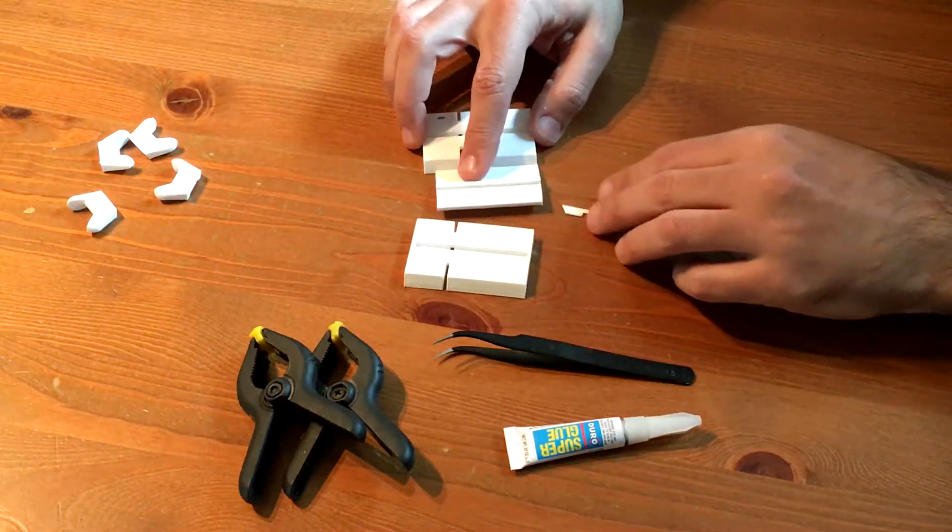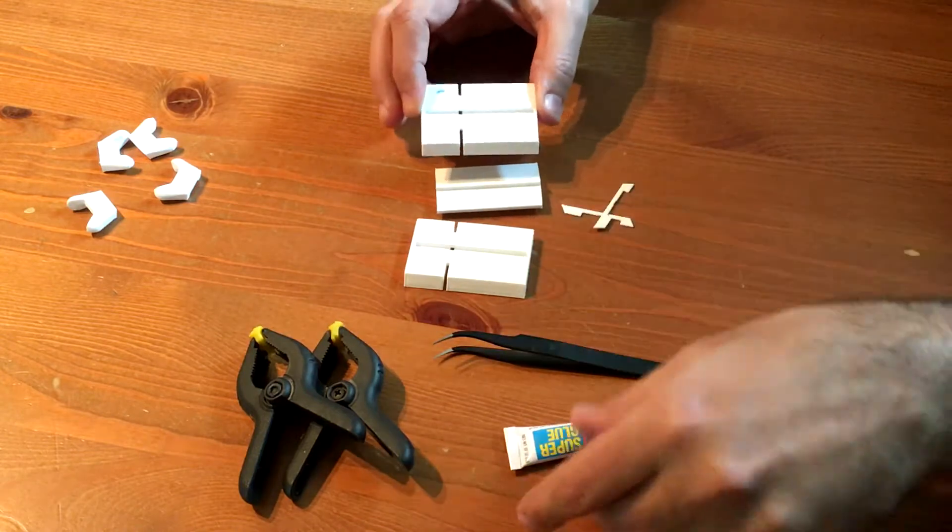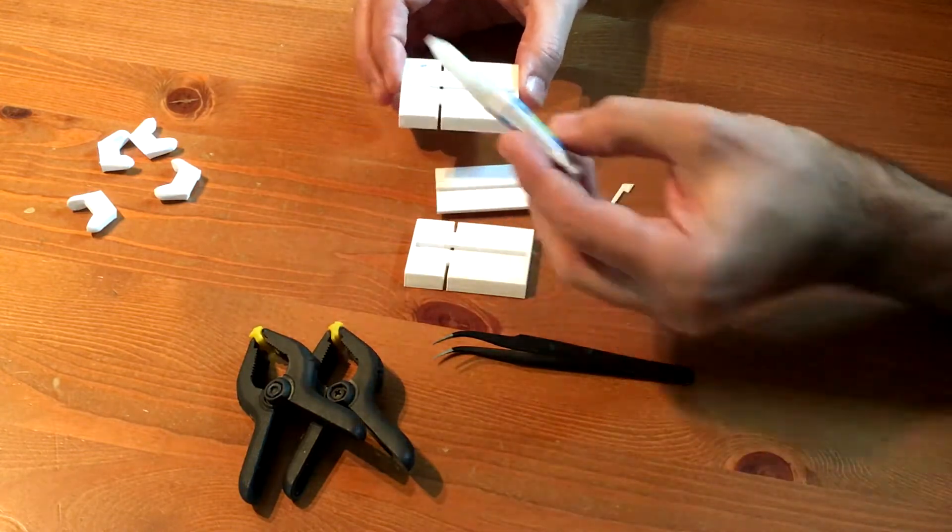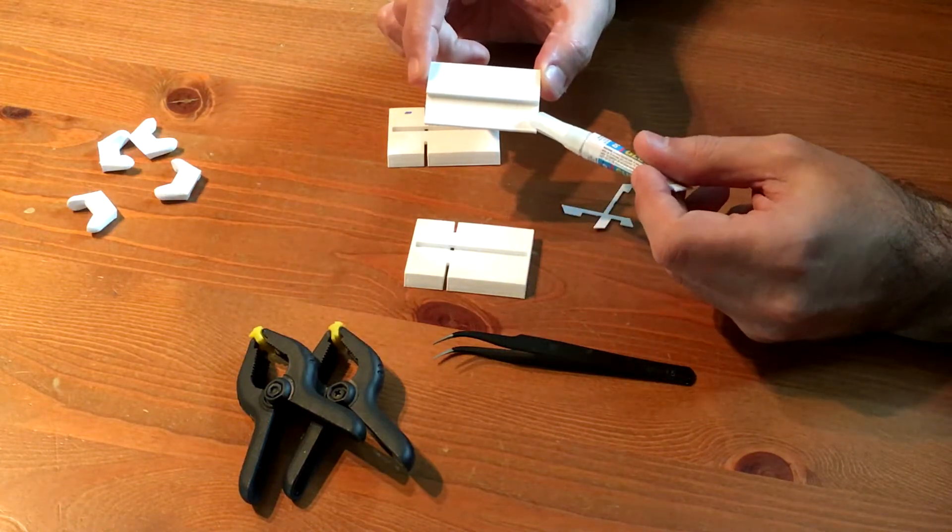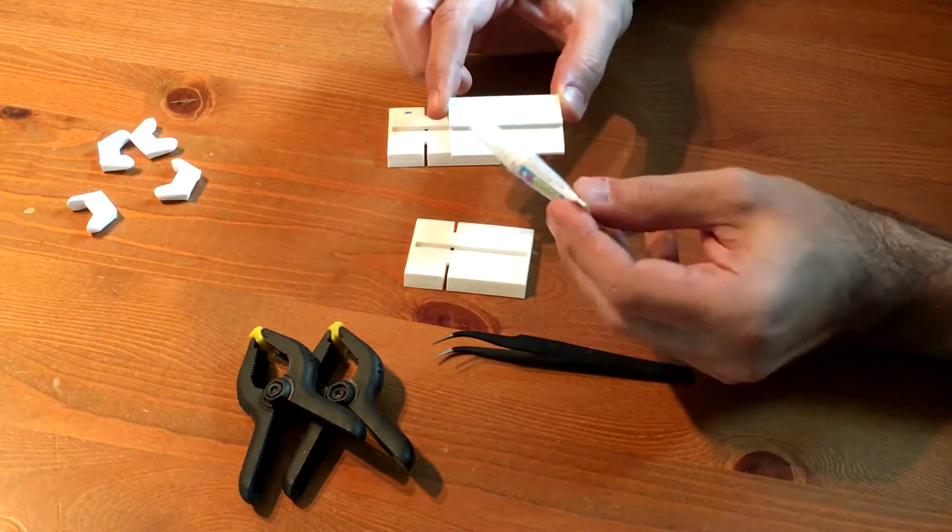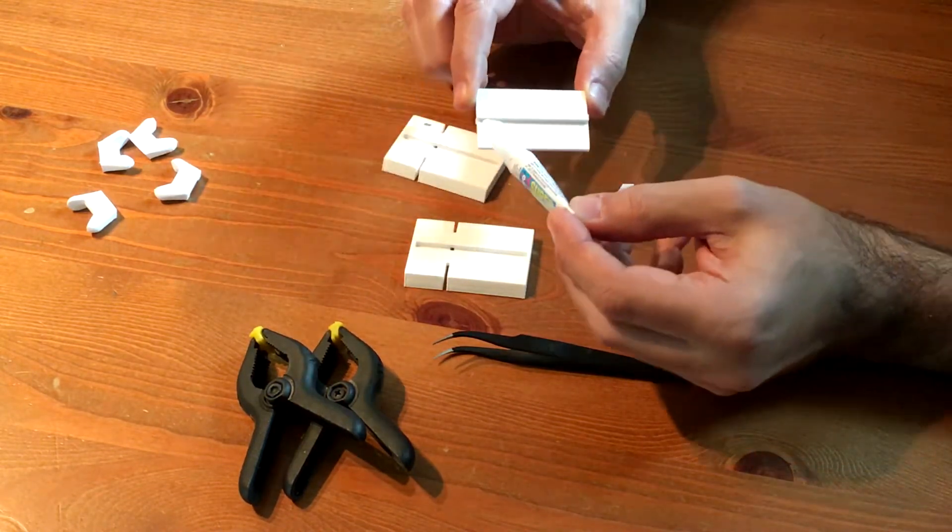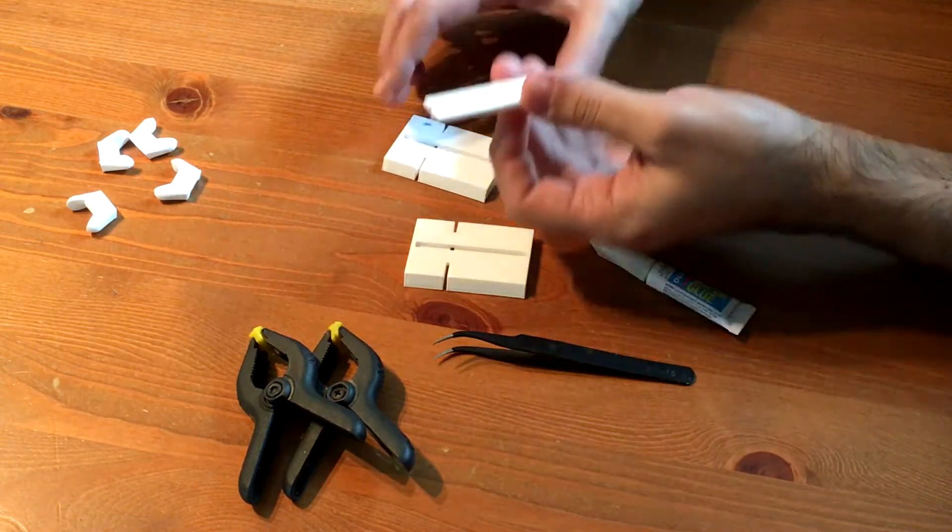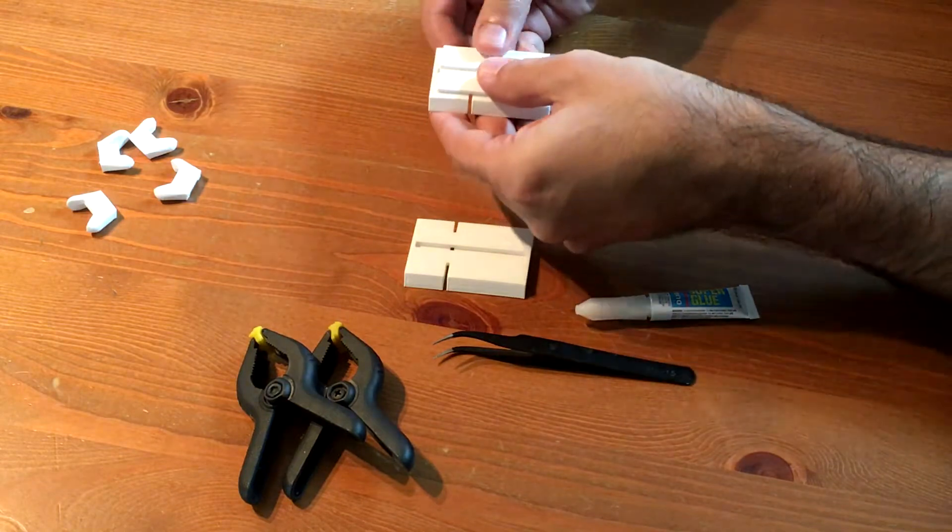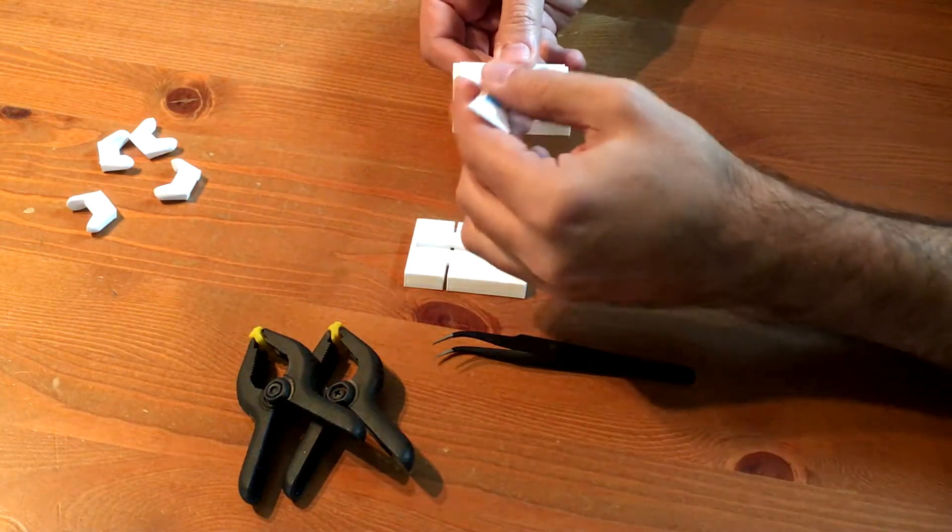So the way this works is you take some regular super glue. You take the center body, which I typically print in black because it's kind of shadows in the center of the machine. You're going to apply a little bit of super glue to the ridge and to each side, and then we're going to set it in that center channel.